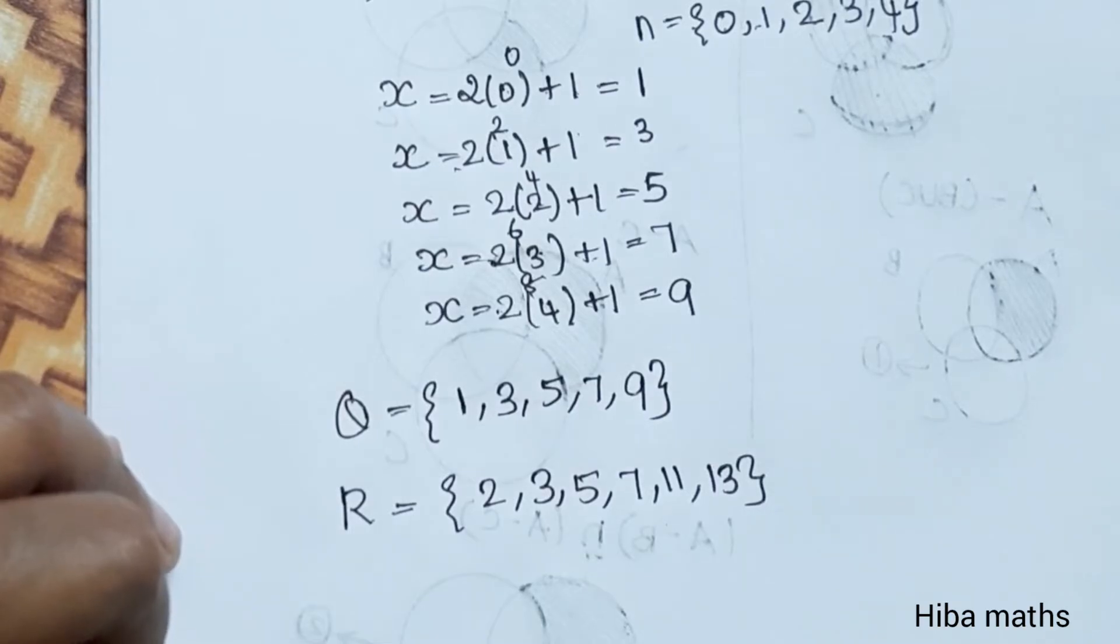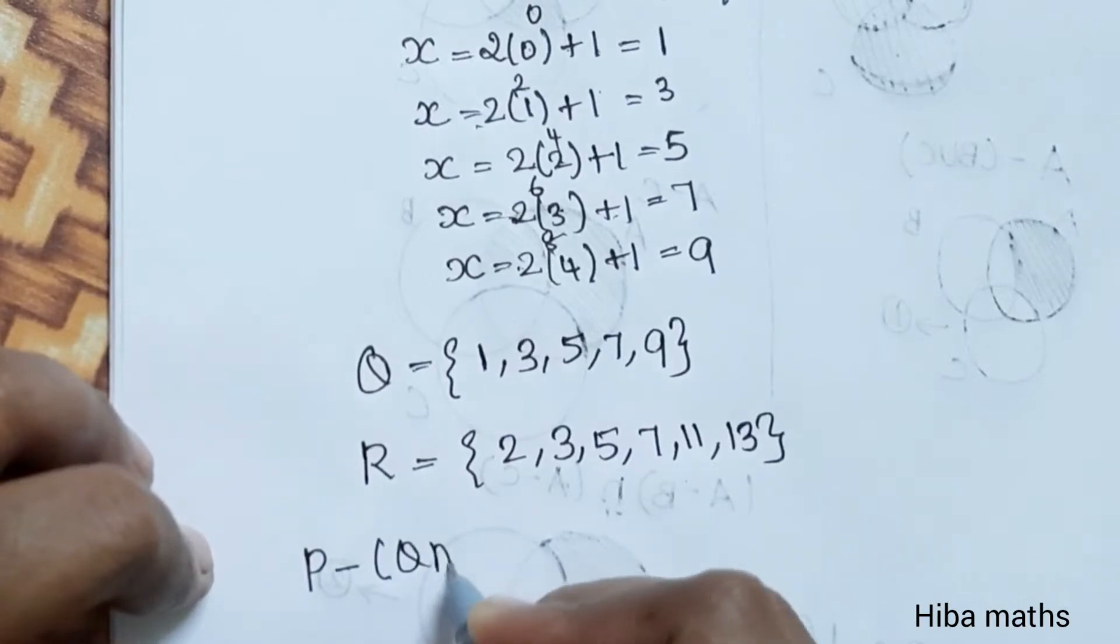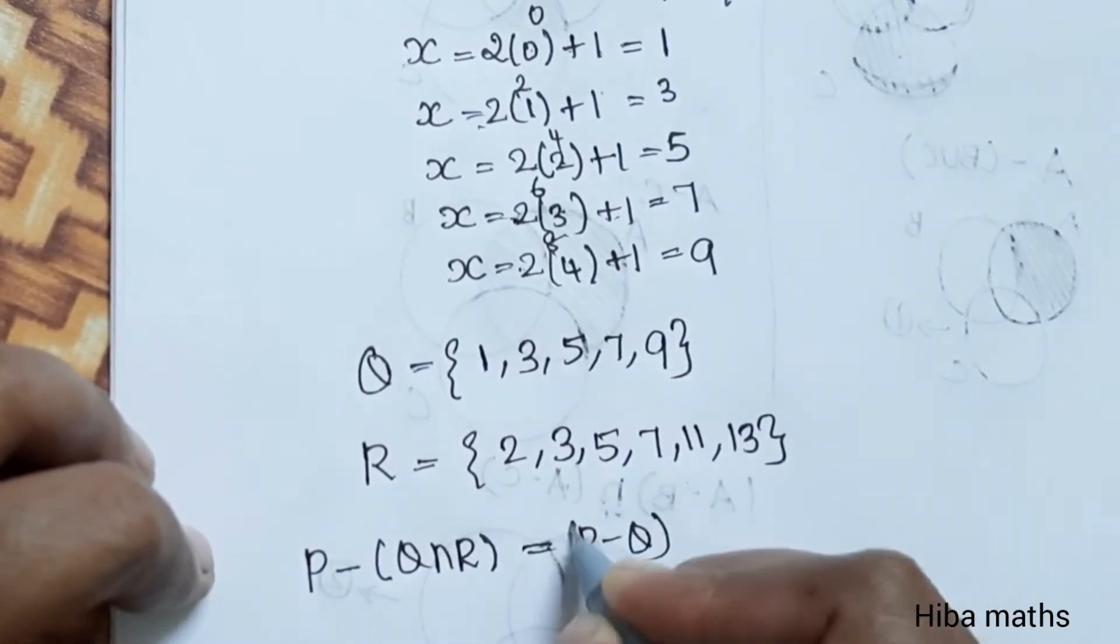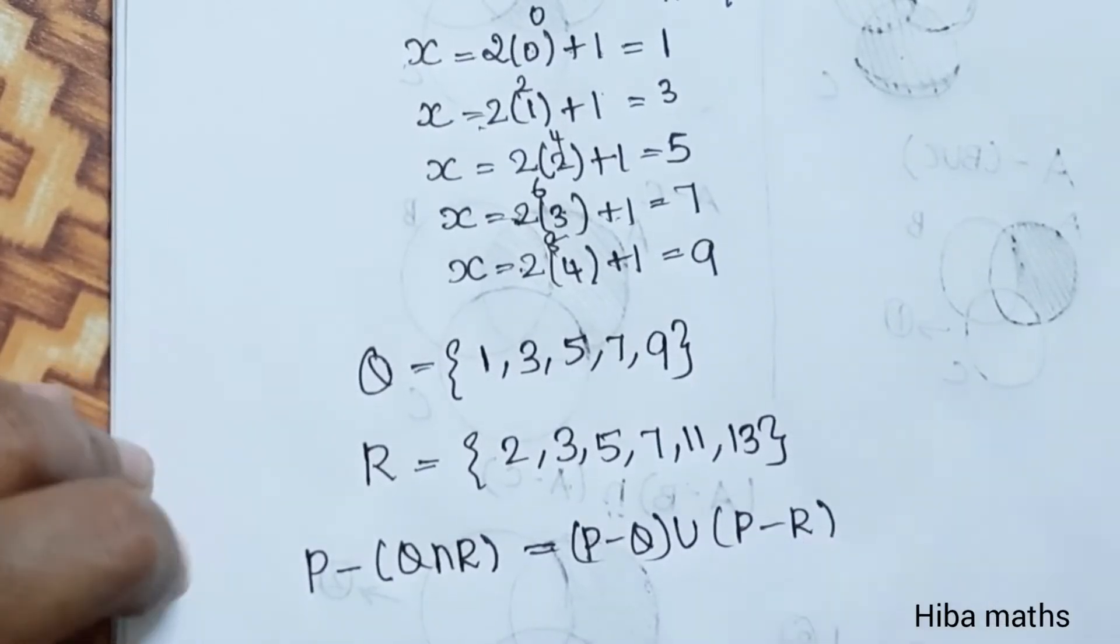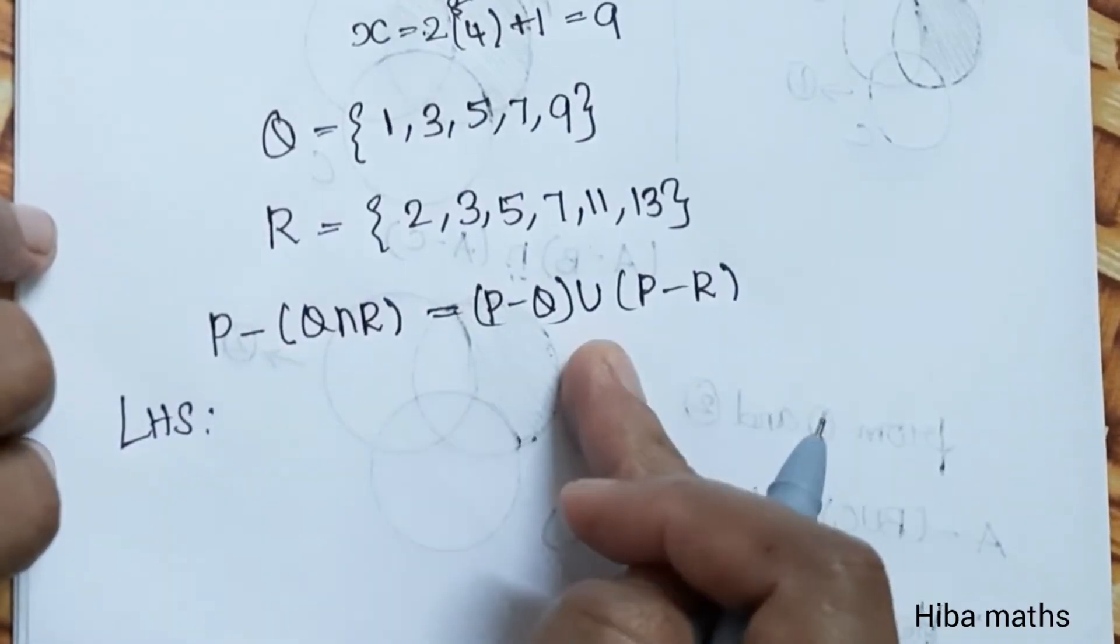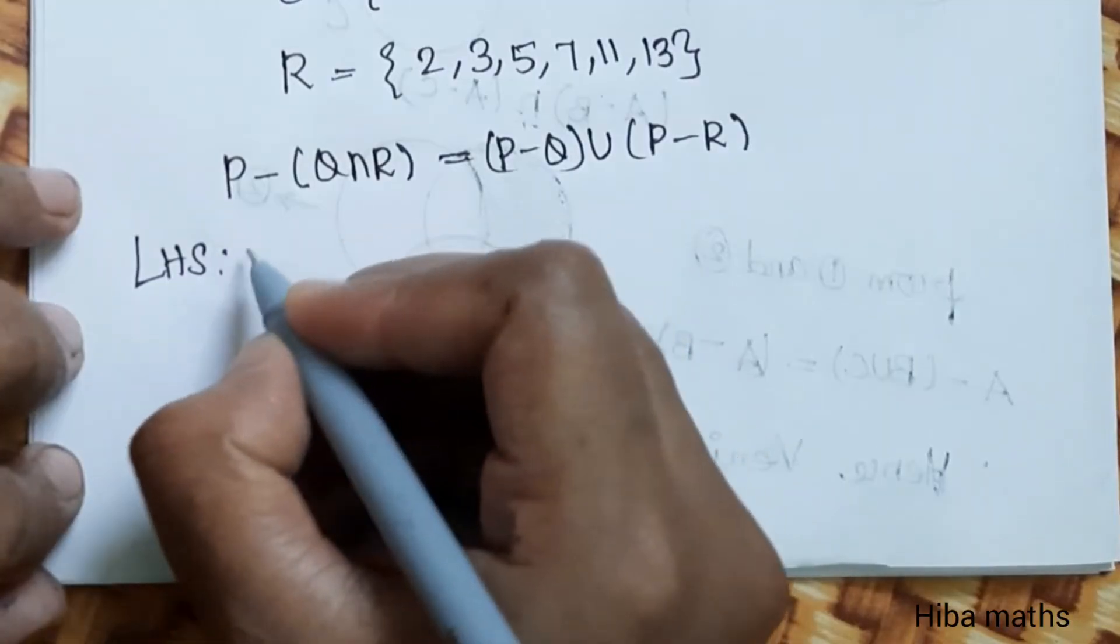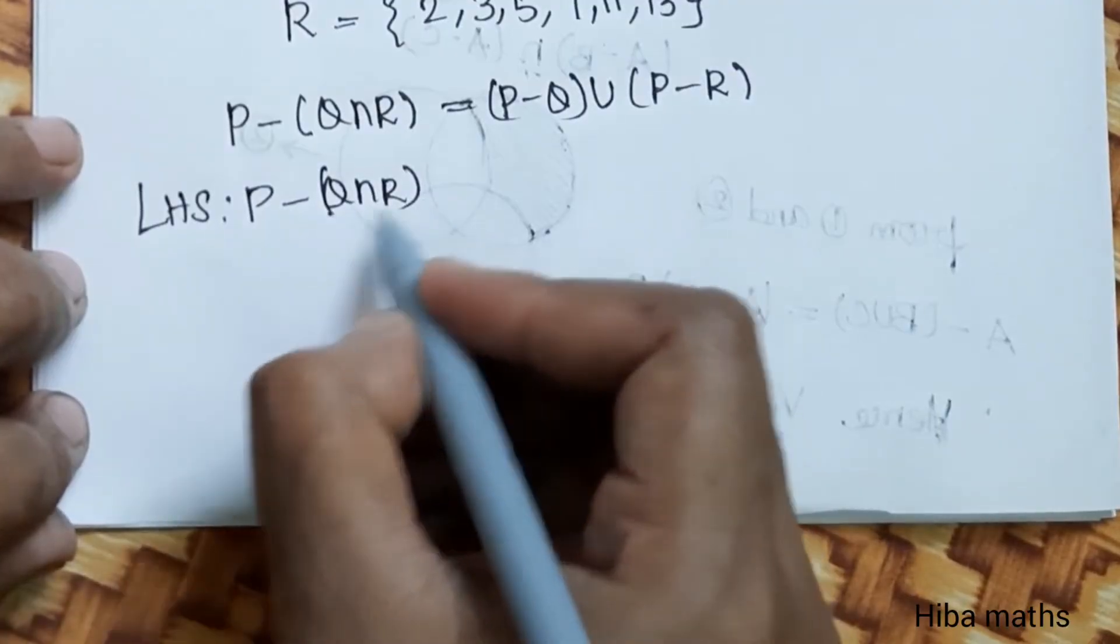Q equals 1, 3, 5, 7, 9 and R equals 2, 3, 5, 7, 11, 13. Now verify P minus Q intersection R equals P minus Q union P minus R. LHS is left-hand side, RHS is right-hand side.